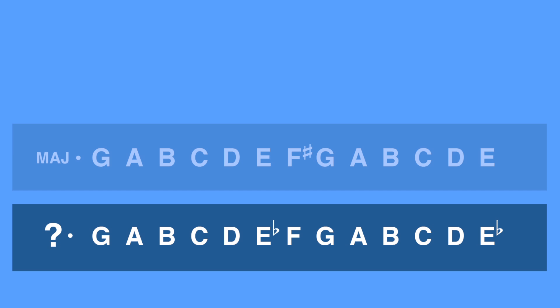Next we have the fifth mode: G, A, B, C, D, E-flat, F, G, A, B, C, D, and E-flat. G major is G, A, B, C, D, E, F-sharp, G, A, B, C, D, and E.